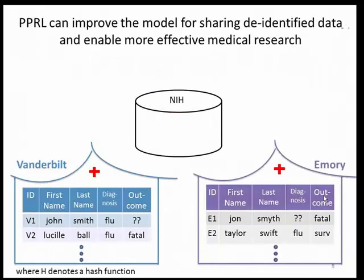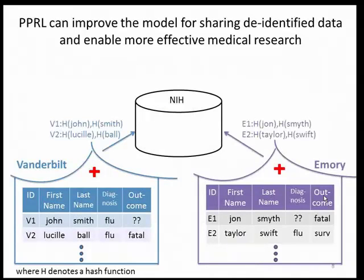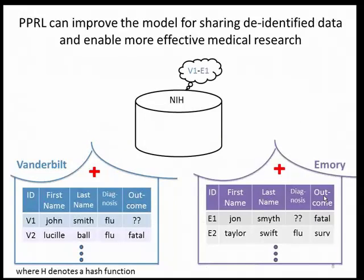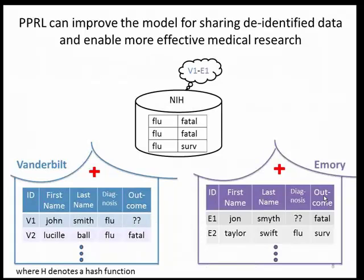Now I'll look at how privacy-preserving record linkage can enable more effective and accurate medical research by preventing these kinds of errors. In this case, privacy-preserving record linkage happens as a precursor to the de-identified data sharing. In the first step, the hospitals send an encoded form of identifying information to the NIH — the encoding is represented as a hash function so it's not readable and doesn't compromise patient privacy. The NIH is still able to perform record linkage on this encoded information and makes a note of which records refer to the same individuals. The de-identified clinical information is then shared and the NIH aggregates the data, merging records referring to the same person, resulting in a clean data set on which accurate research questions can be asked.